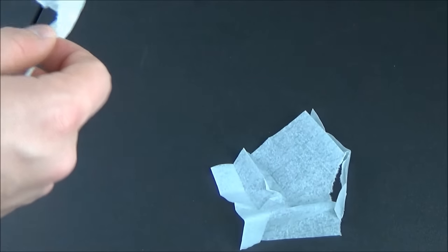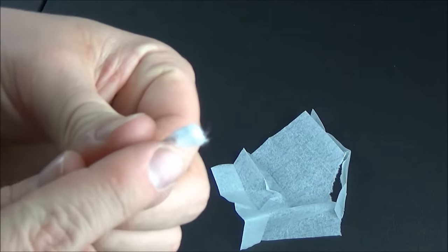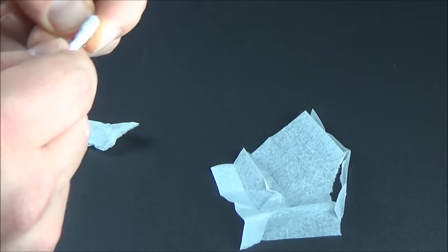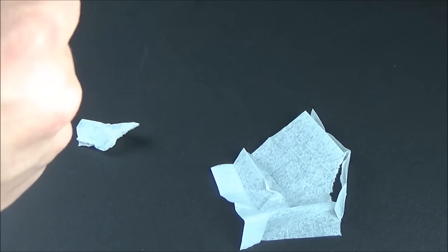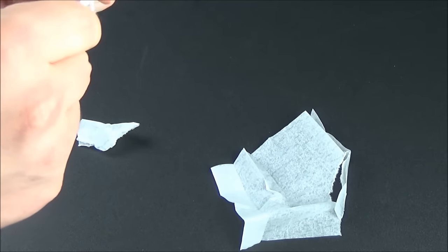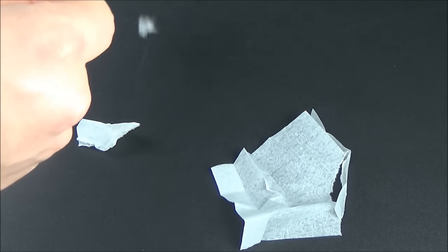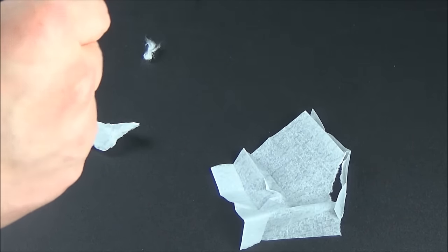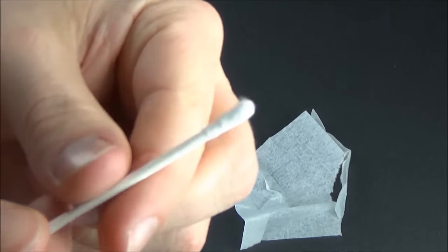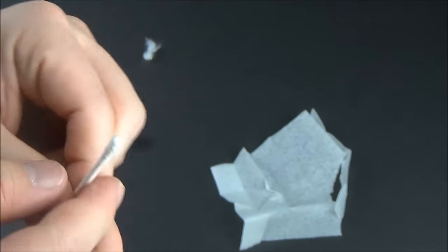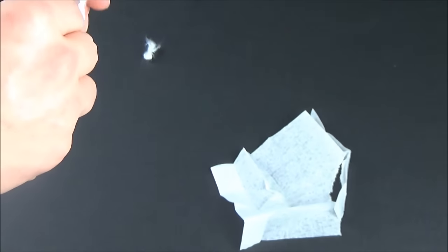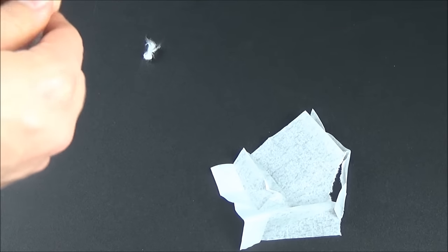This will remove any dirt and dust particles that are sitting on top of there. Now some lasers have a very narrow tunnel leading into the lens and you might not be able to fit the Q-tip in there. One thing you can do is pull the cotton off of the tip of the Q-tip and then wrap the lens cleaning wipe around it again and try that. That will make it a bit more narrow and improve your chances of being able to fit it inside there.